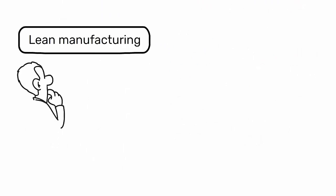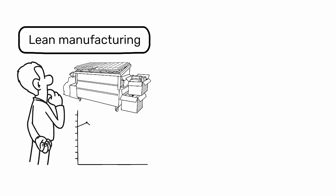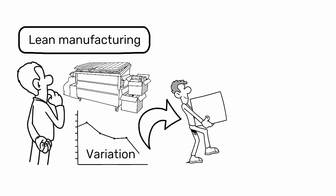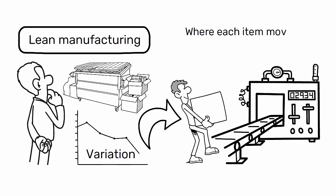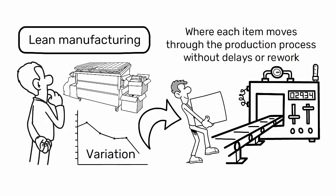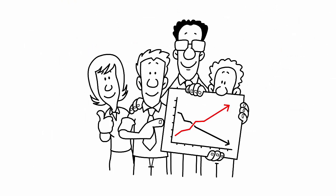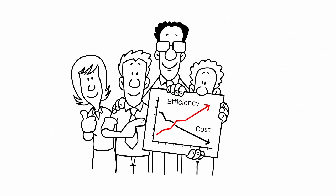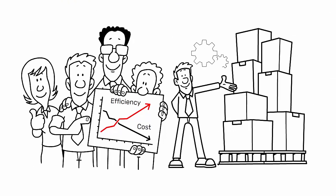In the context of lean manufacturing, process variation is seen as a form of waste. By reducing variation, you can move closer to the ideal of one-piece flow, where each item moves through the production process without delays or rework. This can significantly improve efficiency and reduce costs, making your operations more competitive and sustainable.